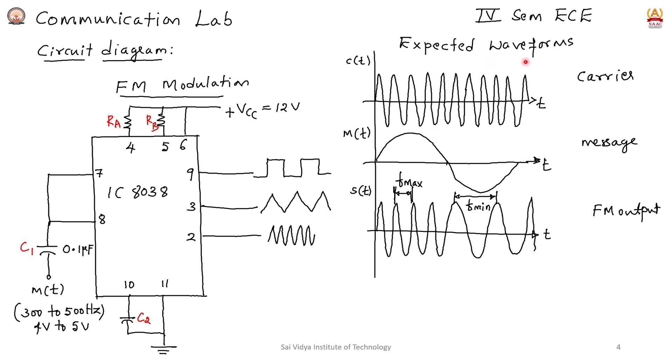These are the expected waveforms to be written in the examination: carrier, message signal, and FM wave. We need to show F maximum and F minimum. One component represents higher frequency and the other represents lower frequency.